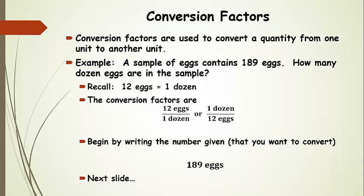Now let's put this together and use a conversion factor to convert from eggs to dozens. Our example problem: a sample of eggs contains 189 eggs, and we want to know how many dozen eggs are in the sample. We're going to have the same amount of eggs at the end — we're just going from a number of eggs to a number of dozens. I always like to start by writing the number given in the problem, so in this case it's 189 eggs.